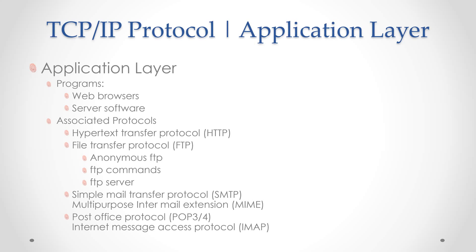Multipurpose Internet Mail Extension — MIME — protocol is used instead for such attachments. A MIME header is used at the beginning of the transmission. Clients use this header to select which media player is needed when the attachment is opened. So if it is just text being fetched, we use SMTP; but if it is other media, then we use MIME.